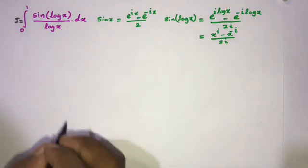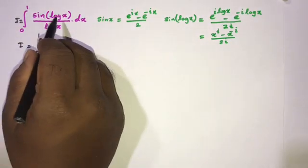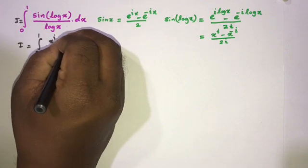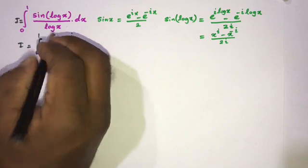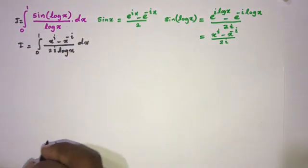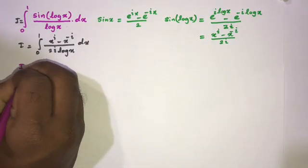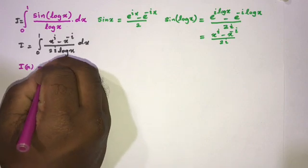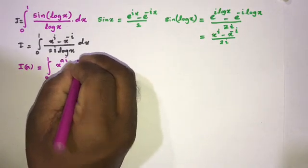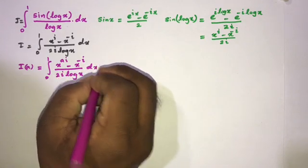Now we can write our integral. I am going to call this I, and we know I equals the integral from 0 to 1 of x to the i minus x to the minus i over 2i times natural log of x dx. I am going to define a parameterized integral: I(a) equals the integral from 0 to 1 of x to the ai minus x to the minus i over 2i times natural log of x dx.